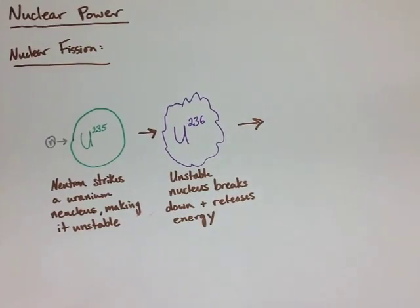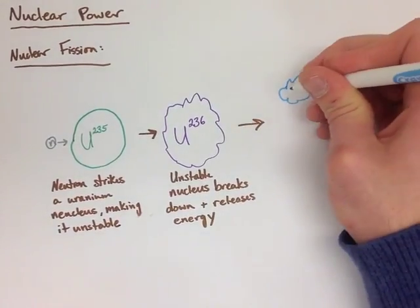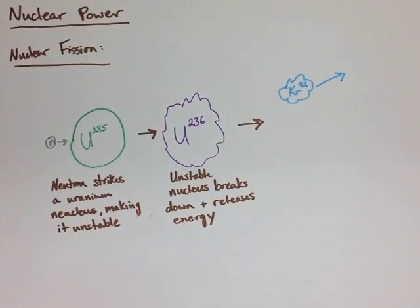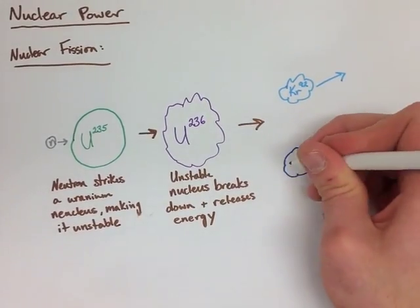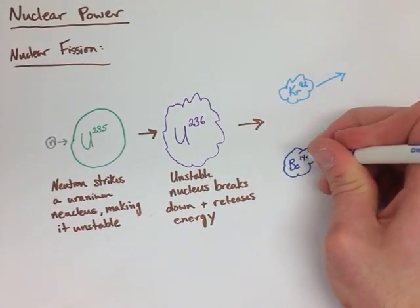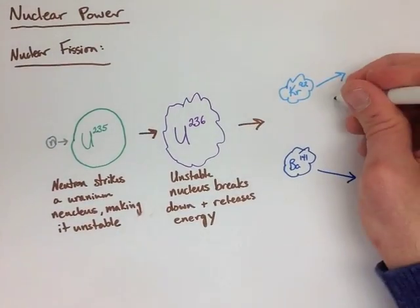It's going to release a krypton daughter nuclei, a barium daughter nuclei, and three neutrons. But it's also releasing an extreme amount of energy.